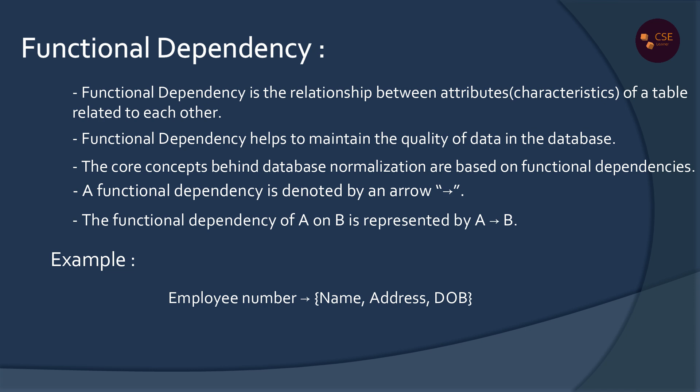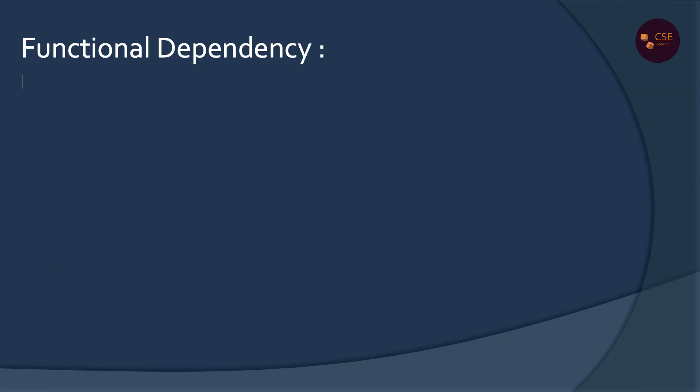Employee Number is the Determinant Attribute and Name, Address, Date of Birth are Dependent Attributes. Similarly, Vehicle ID determines Model and Color. Vehicle ID is the Determinant Attribute and Model and Color are Dependent Attributes.